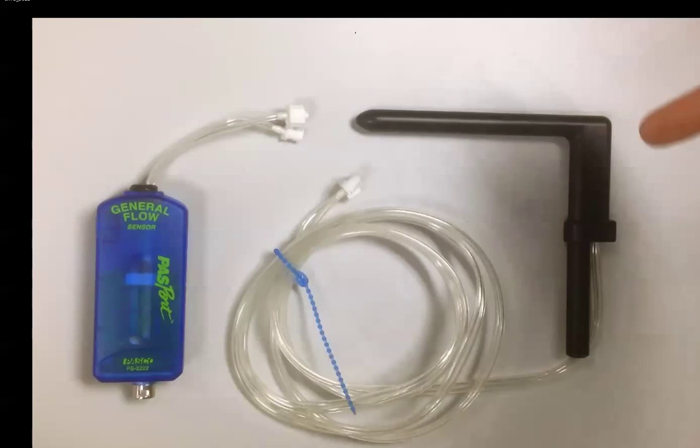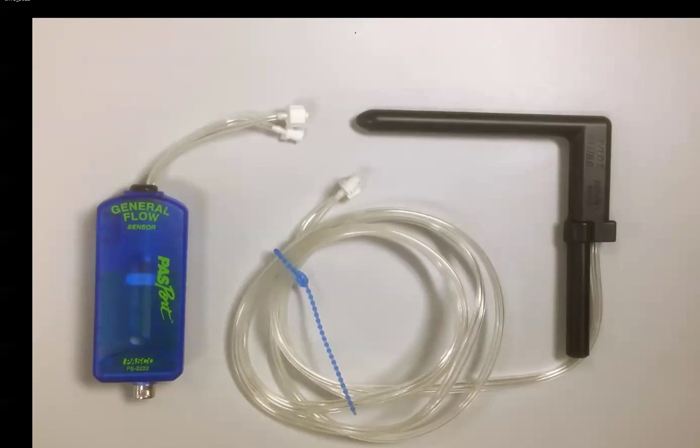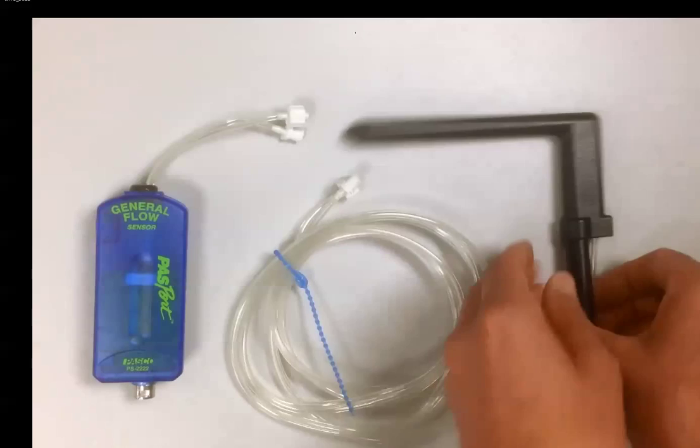On the right hand side we have the pitot tube attachment for use with the general flow sensor. The pitot tube can be mounted a variety of different ways. On the right hand side you can see that there is a 1.5 inch diameter rod that can be used with any clamping mechanism.